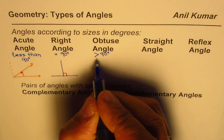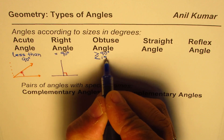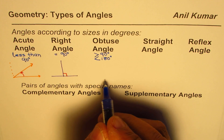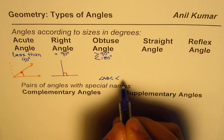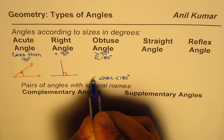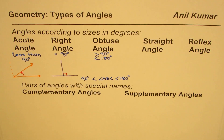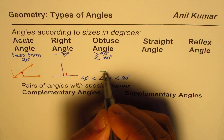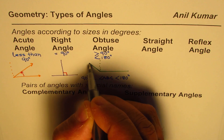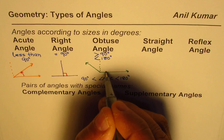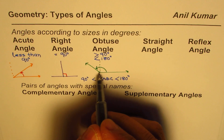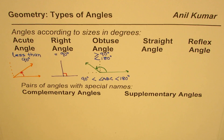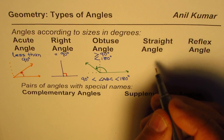Obtuse angle is the one which is greater than 90 degrees but also less than 180 degrees. So if we have an angle ABC, that angle is less than 180 degrees but greater than 90 degrees — that would be an obtuse angle. Let me sketch one: anything greater than 90 degrees and less than 180 degrees is an obtuse angle.